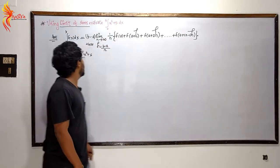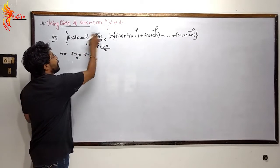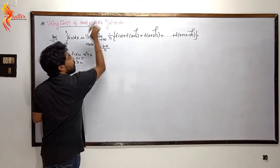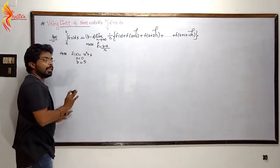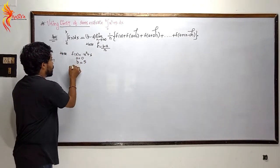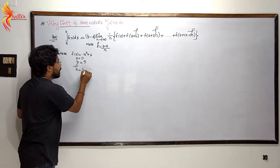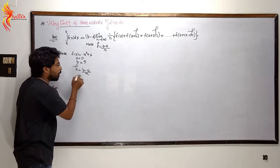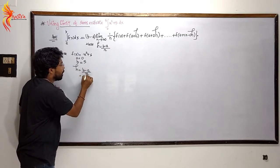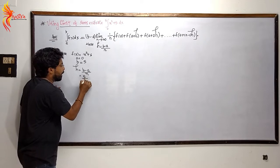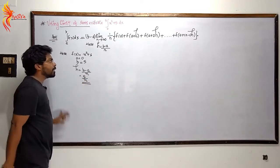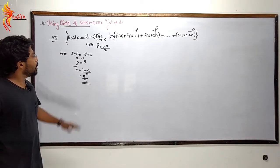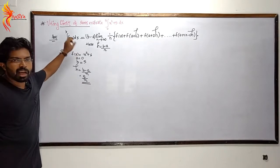What is a? a is 0 and b is 5. So h is equal to b minus a divided by n.